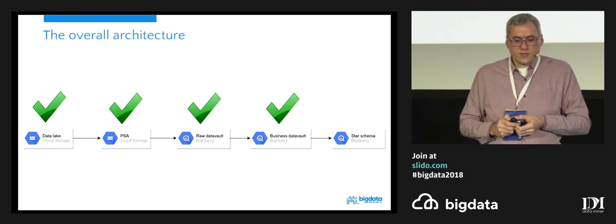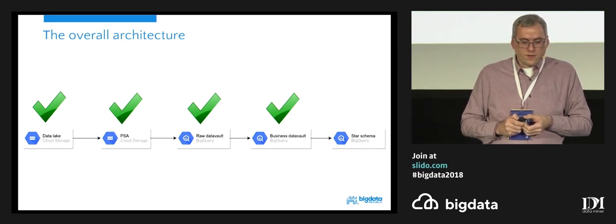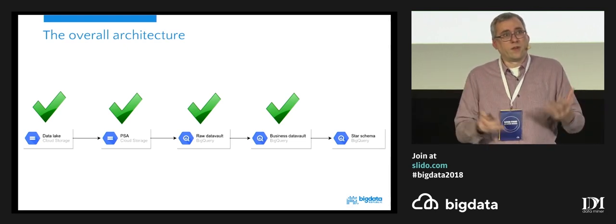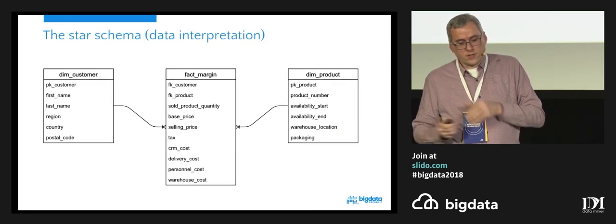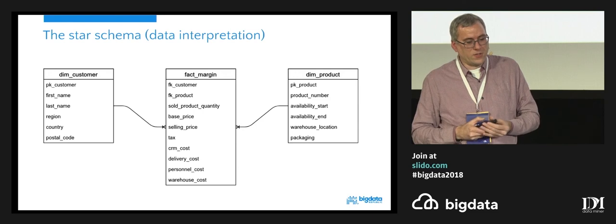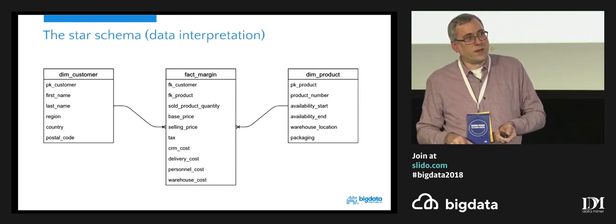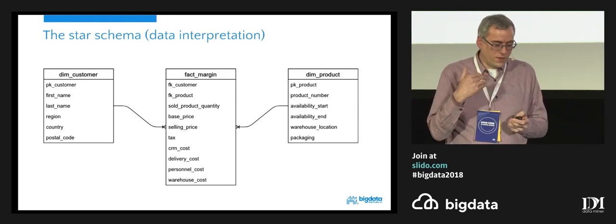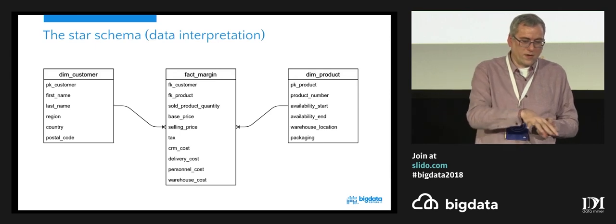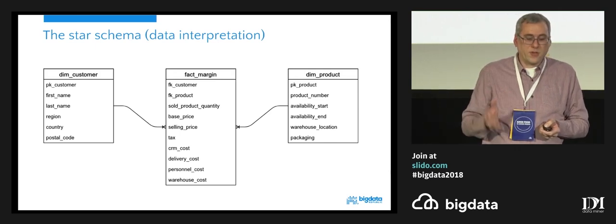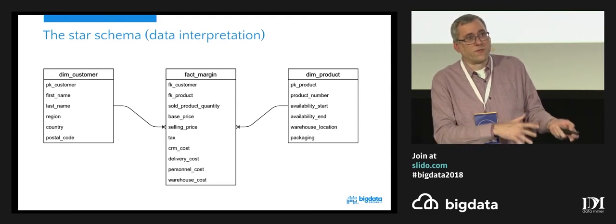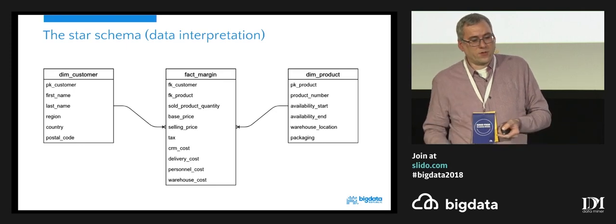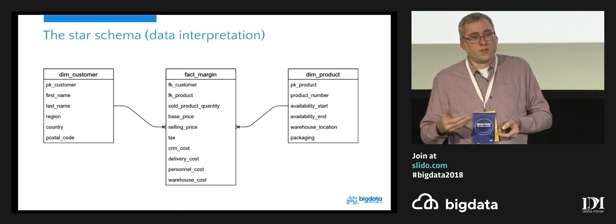In the overall architecture, we've now looked at the business Data Vault where all the value is created. Then we have the star schema, which is generated directly out of the business vault. When we have the desirable base from all the business vault tables, we extract all the metrics calculated from the business vault and put them into a star schema for visualization.